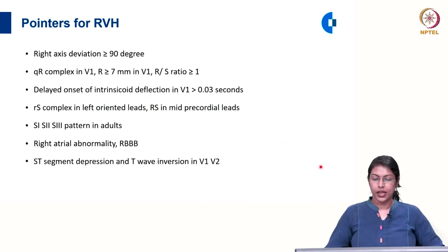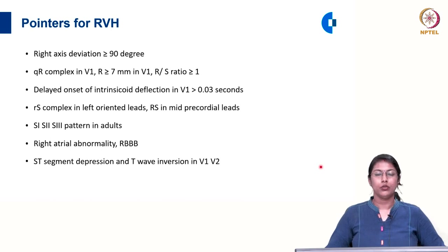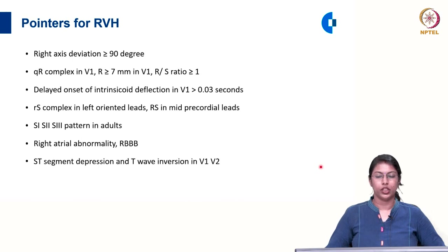Pointers for right ventricular hypertrophy in the ECG include: right axis deviation of more than or equal to 90 degrees; a QR complex — a small Q and tall R — in V1, or an R wave amplitude more than 7 millimetre in V1, or an RS ratio more than or equal to 1 in V1. Similar to LVH, there is delayed onset of intrinsicoid deflection in V1 more than 0.03 second, because the right ventricular muscle mass is increased.